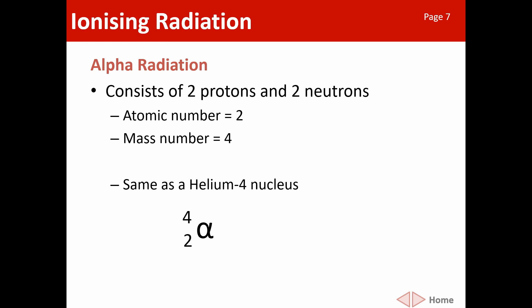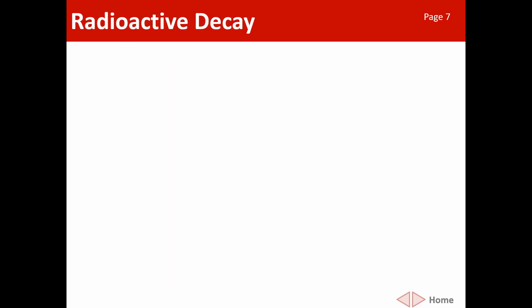This is how we write it: four on top, two on the bottom, and the alpha symbol. Alpha is just the first letter of the Greek alphabet. The four refers to the mass number and the two refers to the atomic number. That notation of four-two-alpha is important to memorize. You need to memorize the notation for the three types of ionizing radiation. You could also write it as four-two-He because they are identical.